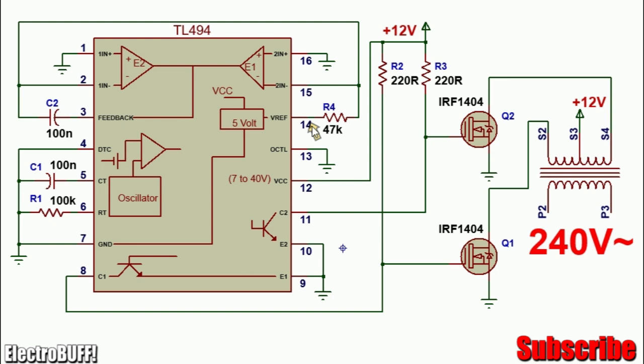Pin 14 generates 5 volts when the IC is powered from 7 to 40 volts, as shown. You pull them up via a 47 kOhm resistor R4. Connect the feedback pin 3 to pin 2 through a 100 nF capacitor, as shown.